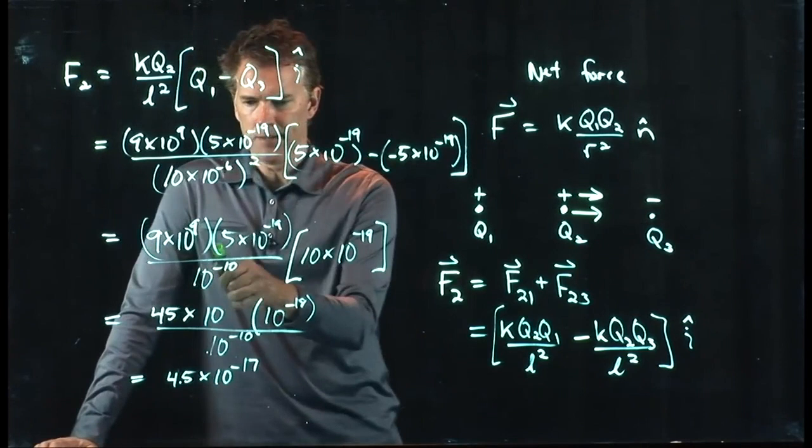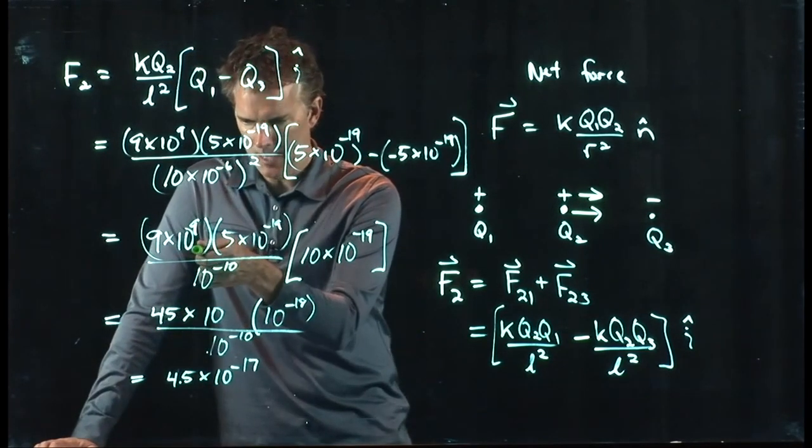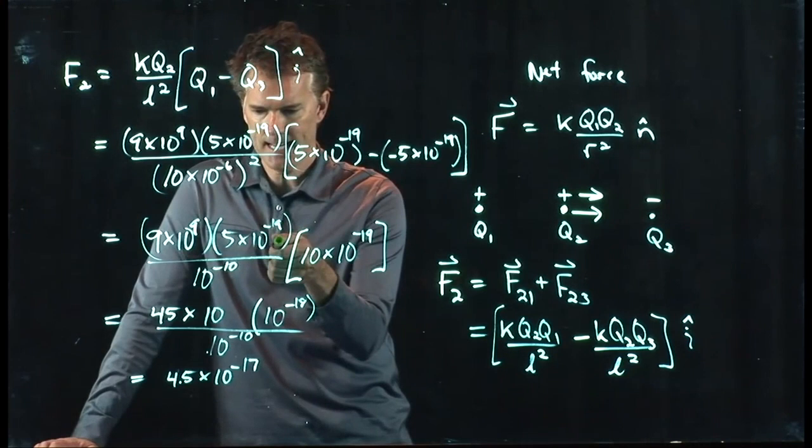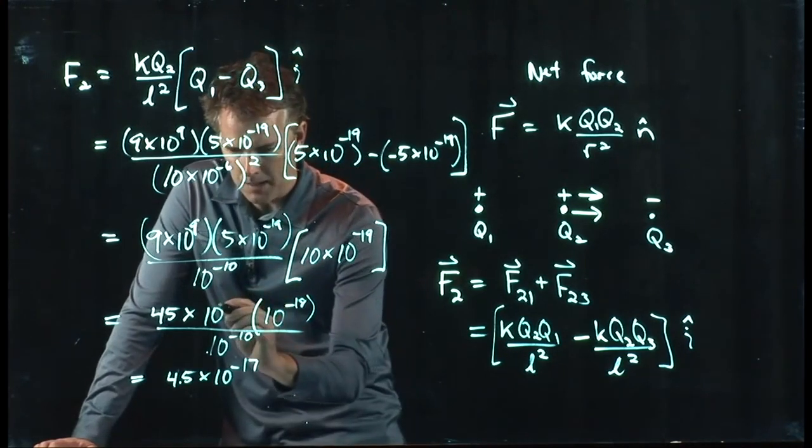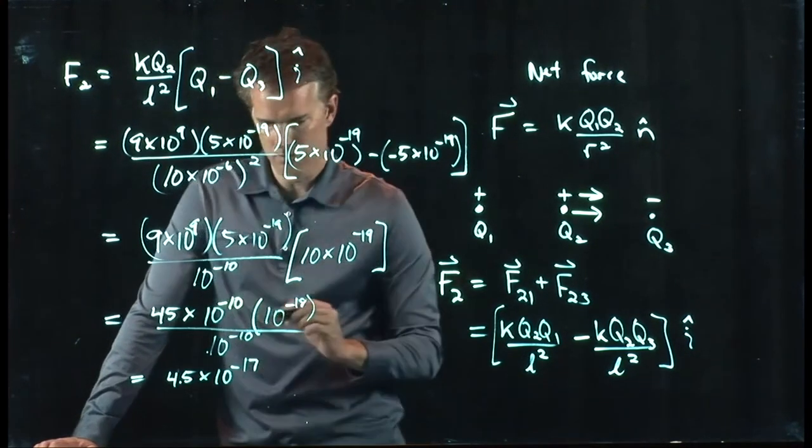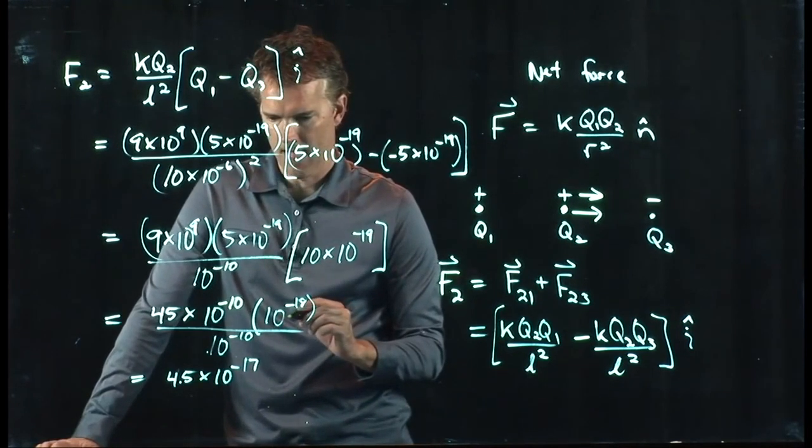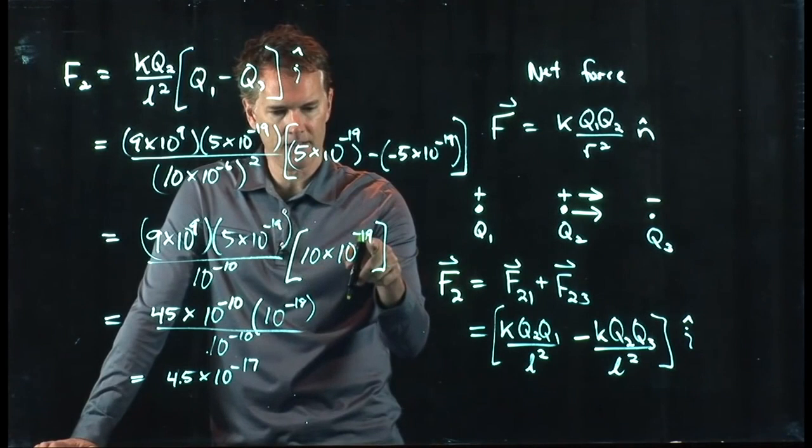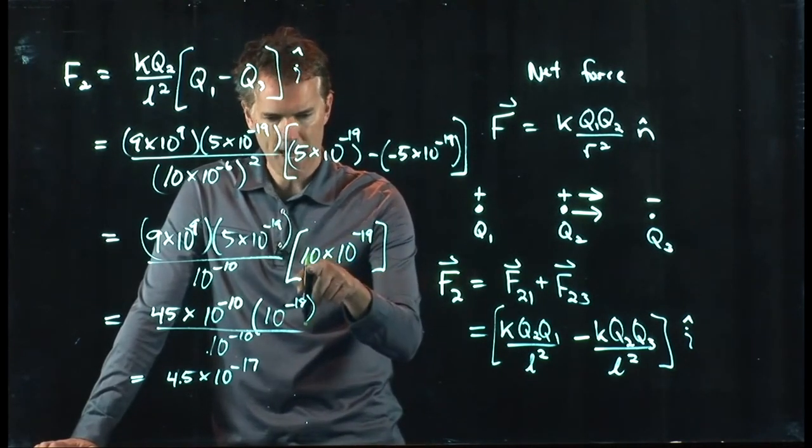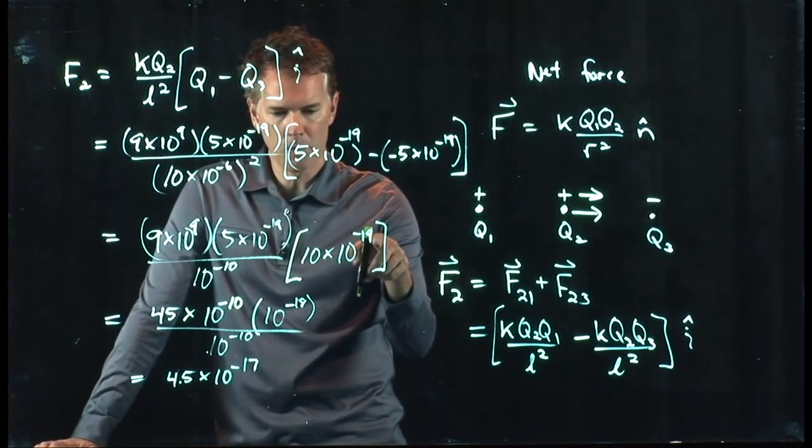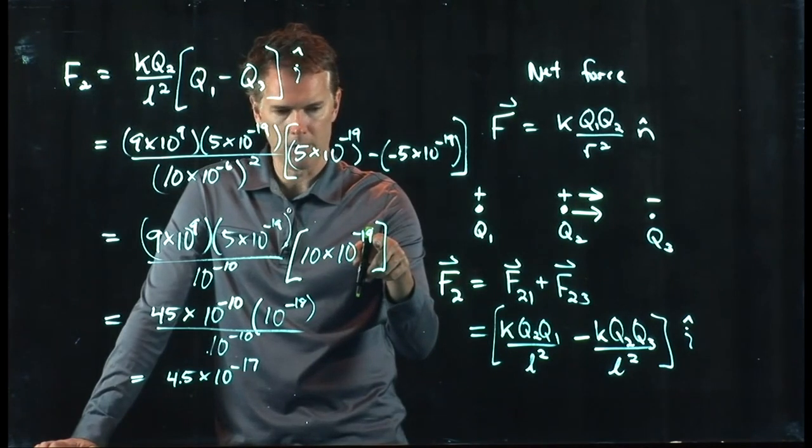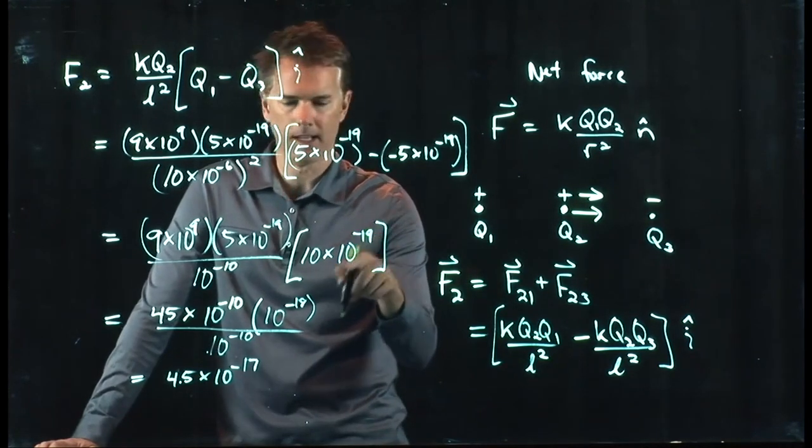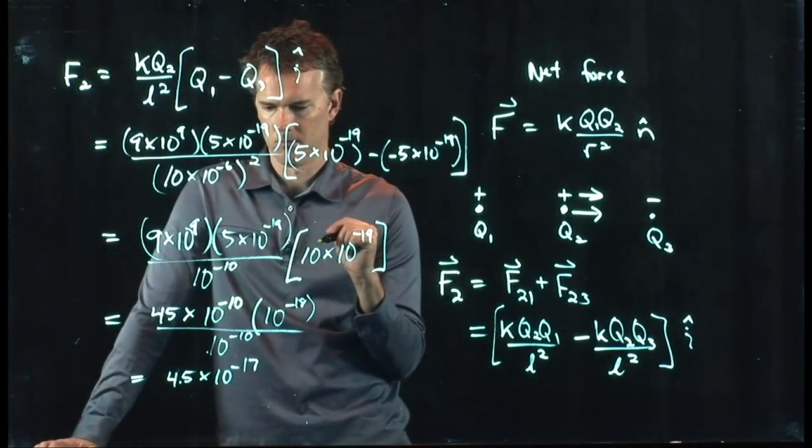Let's see, the 9 times 5 got us a 45, and then we had a 10 to the 9 and a 10 to the minus 19, so that became a 10 to the minus 10. And then this one right here, 10 times 10 to the minus 19, the 10 means I have to add 1 to the exponent, and so adding 1 to minus 19 becomes minus 18, right?